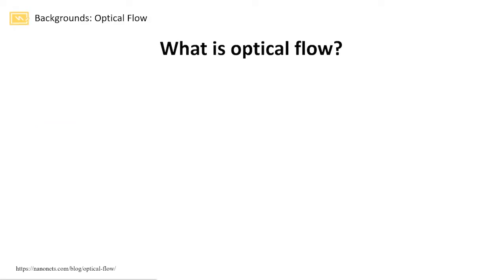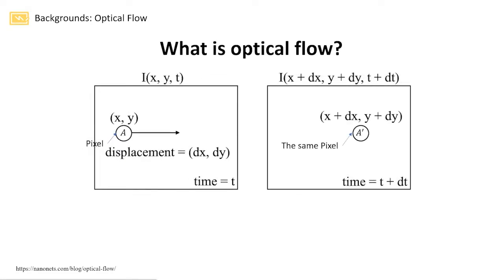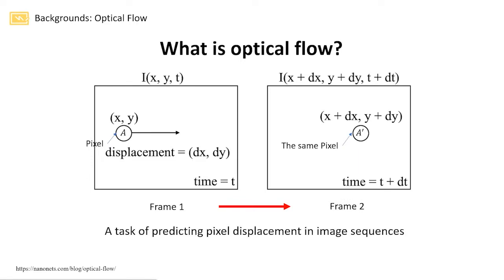So what is Optical Flow? Optical Flow is the notion of scenes caused by the relative movements between the object and the camera. In this picture, we have two consecutive frames in time, and we aim to find the Optical Flow from frame 1 to frame 2. For a given pixel with coordinate xy, we aim to find the corresponding pixel A' in frame 2 by predicting a 2D displacement vector dx and dy. Simply put, Optical Flow is the task of predicting a set of pixel displacements between two consecutive images.